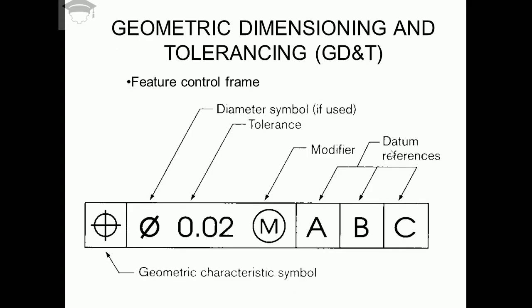Next, if any diameter is required, we write the diameter symbol, or else this is left blank. Then we write the tolerance, that is the tolerance that can be achieved or permitted.